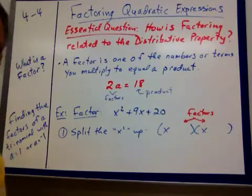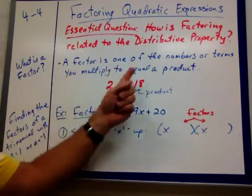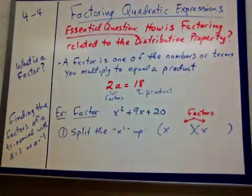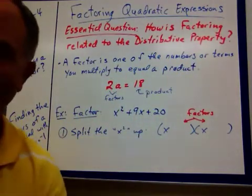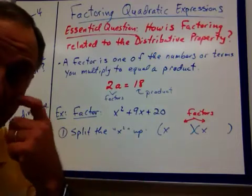I guess to get started here, we should define a factor. What is a factor? A factor is one of the numbers or terms you multiply to equal a product. 2 times 3 equals 6. 2 and 3 are factors.